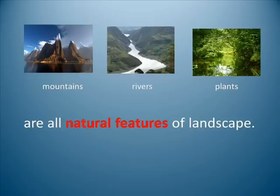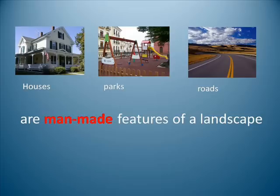Mountains, rivers, and plants are all natural features of landscapes. Houses, parks, and roads are man-made features of a landscape.